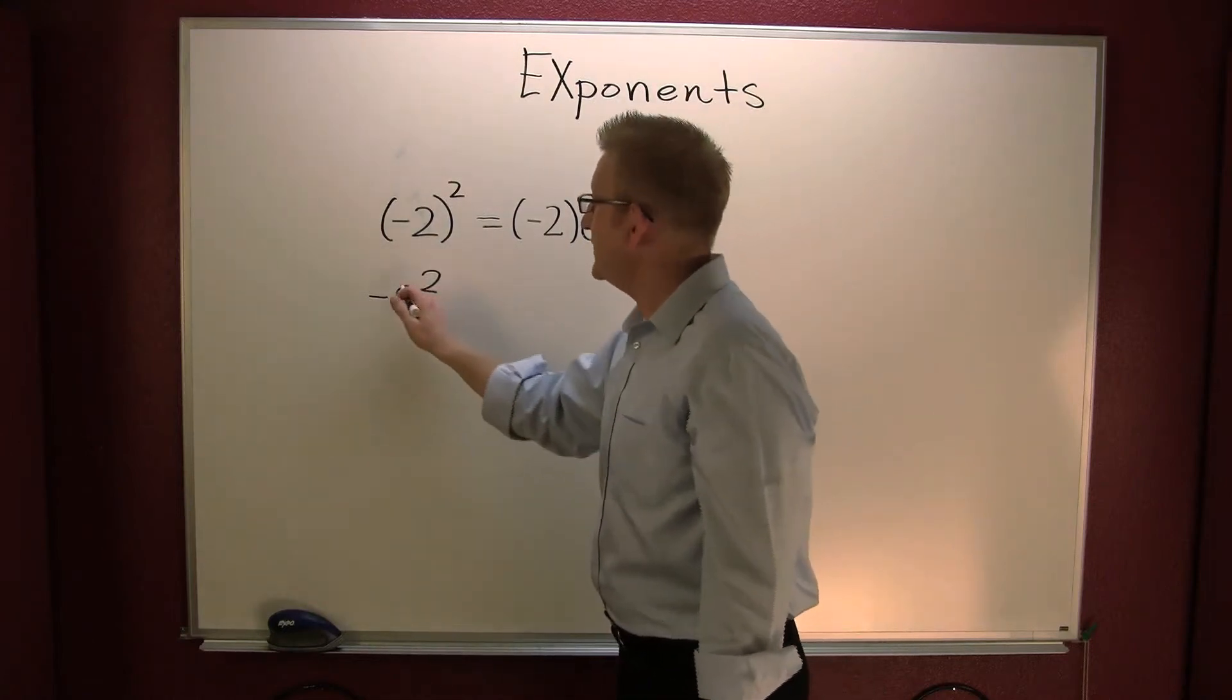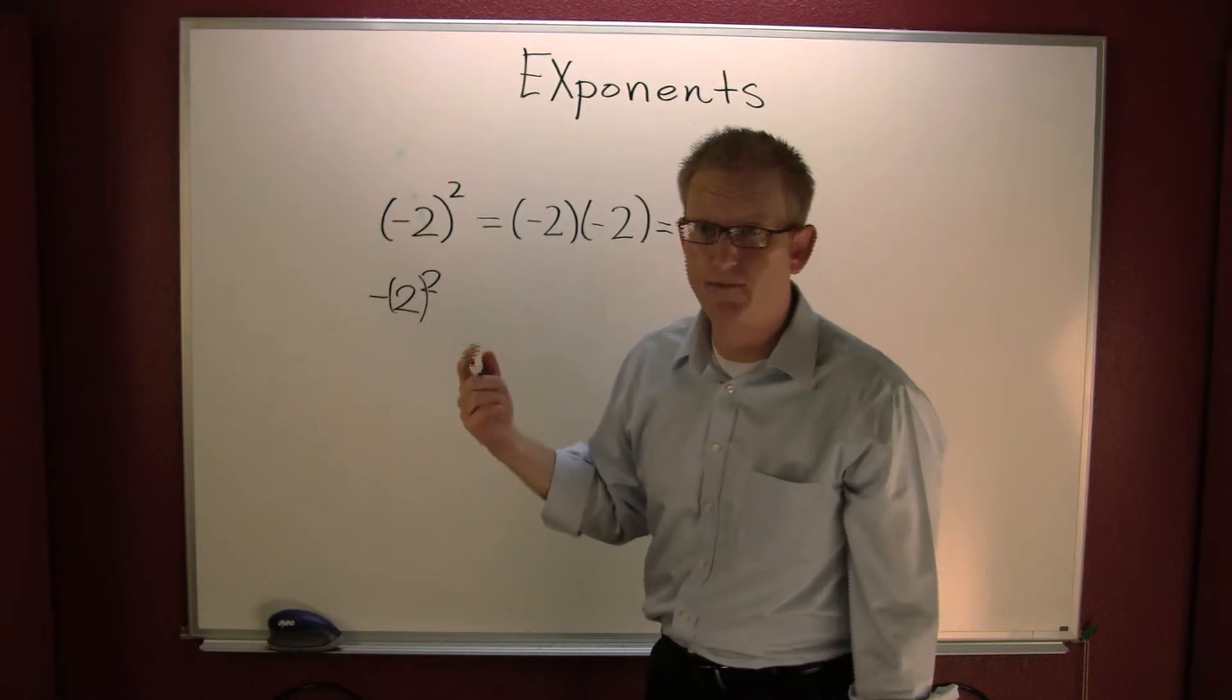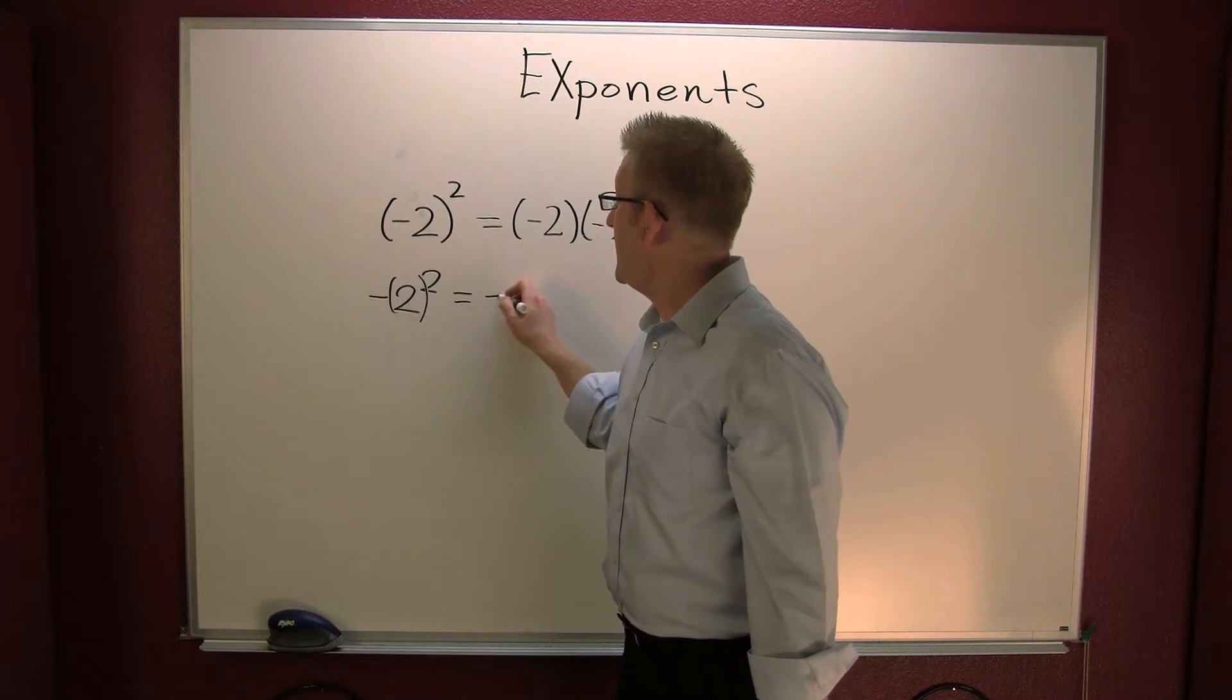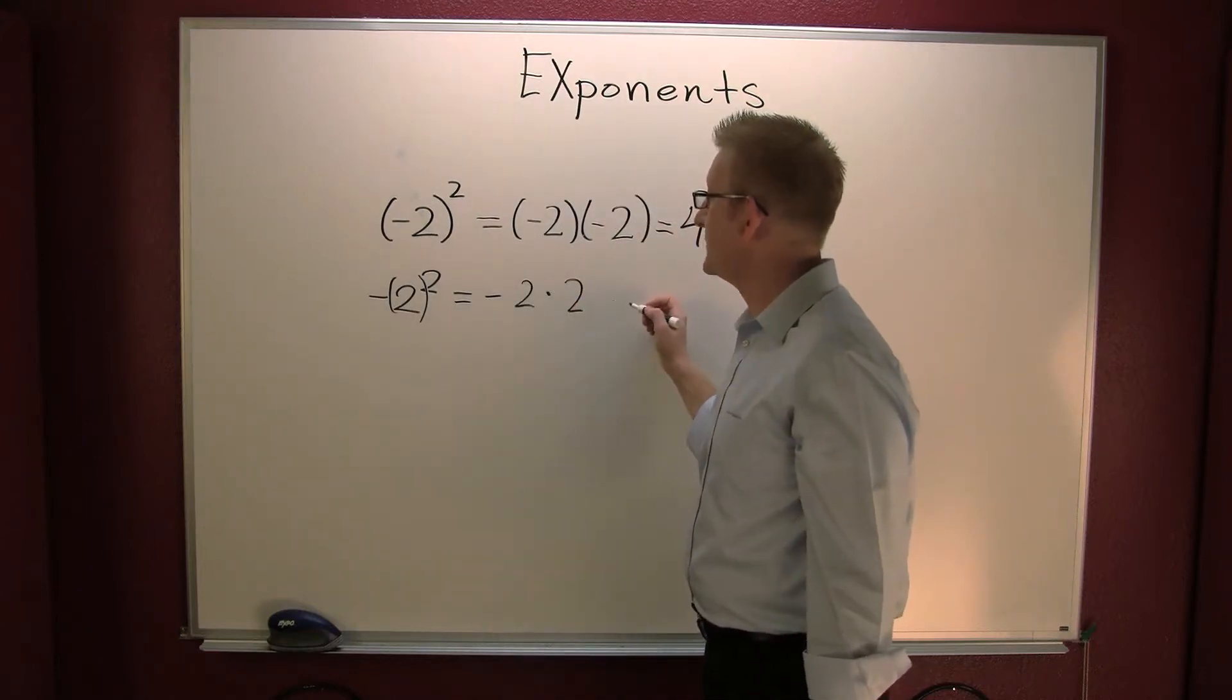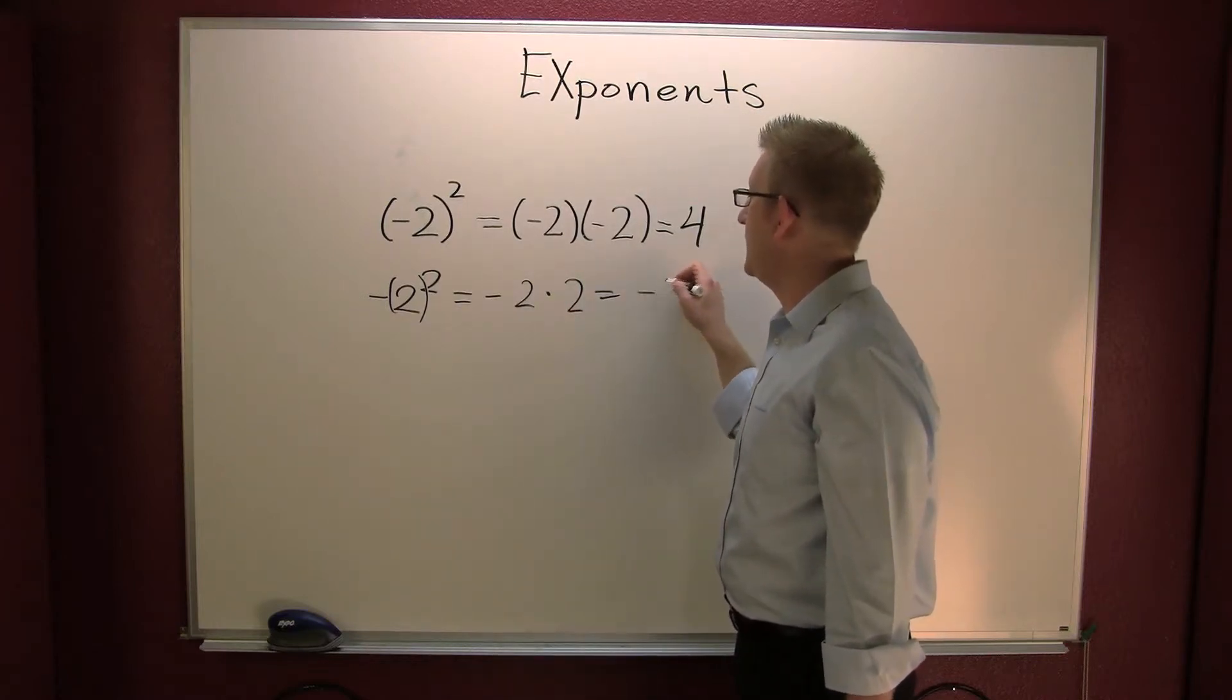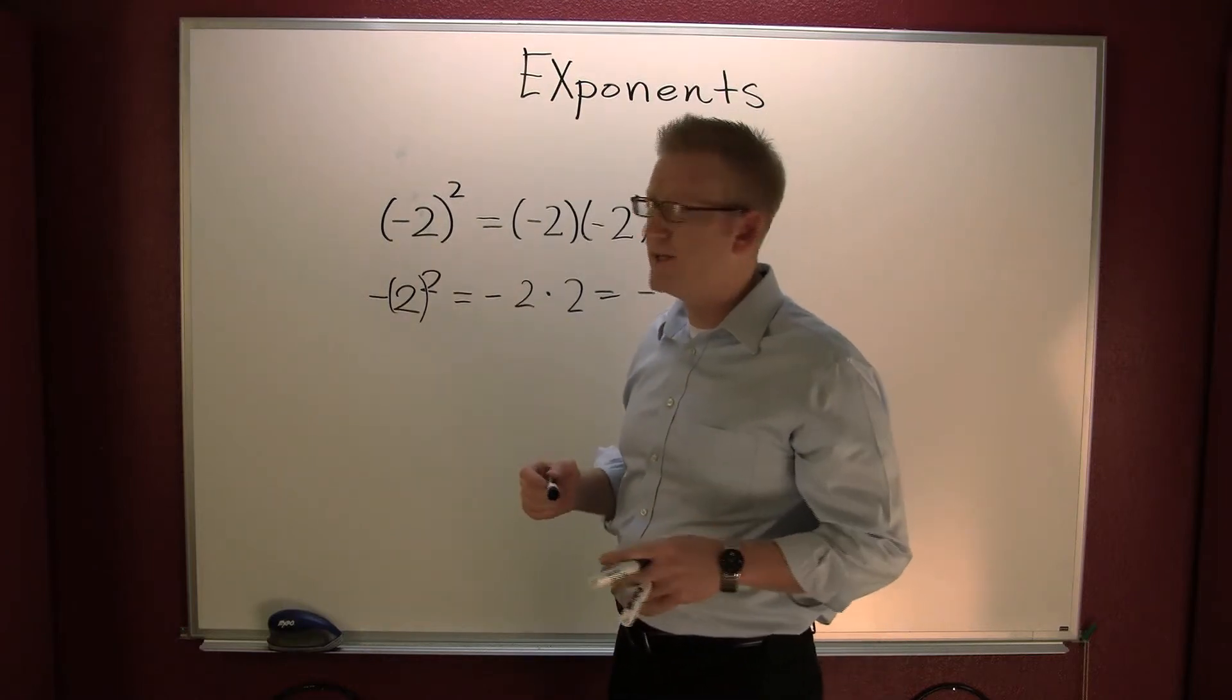Down here, only the two is being squared. You can kind of see it like there's a one multiplied out front. I don't usually show it that way, but some people like that. So this is a minus two times two, and that is going to get you a minus four. So you got to be real, real careful about your parentheses.